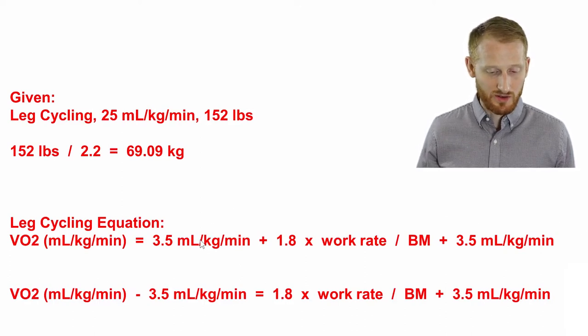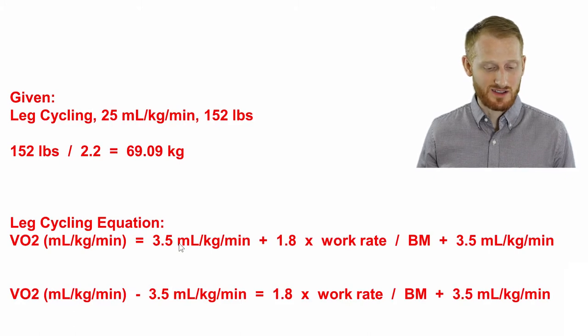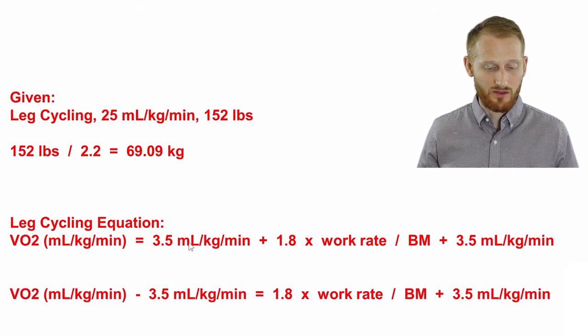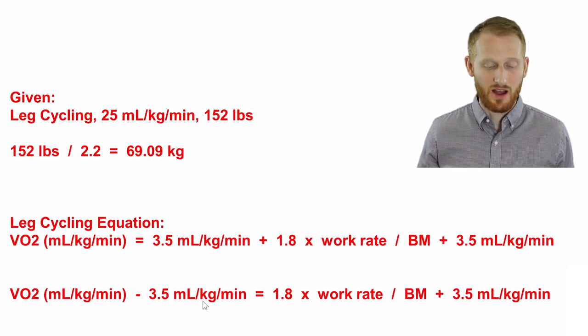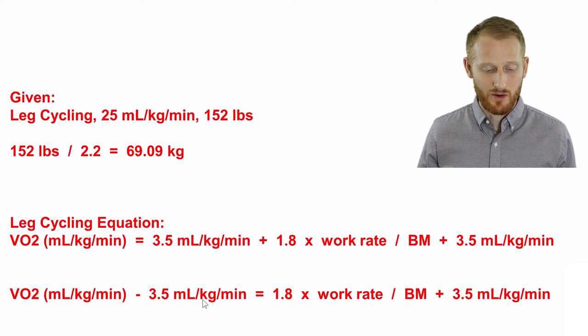I'm going to simply take this which is positive on the right side of the equation. I'm going to subtract 3.5 from both sides of the equation. So this would cancel out and we end up with a negative 3.5 mls per kg per minute on the left side of the equation.